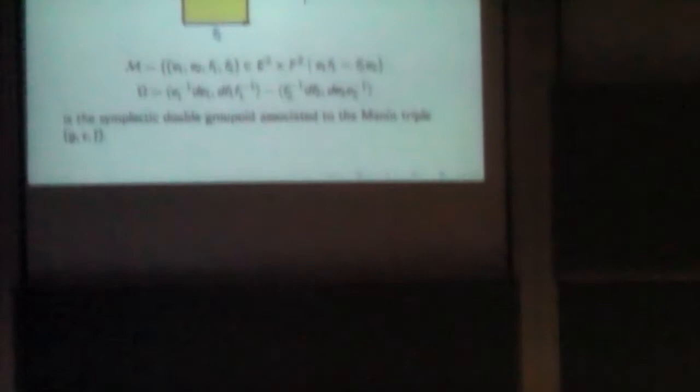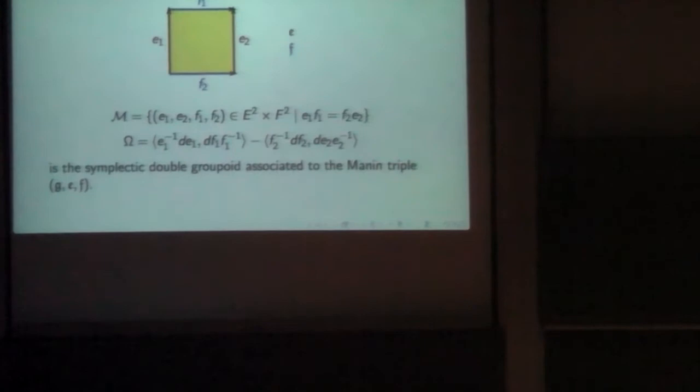If this map is transverse to the identity, it's guaranteed to be transverse to the identity if these subalgebras are transverse, just because they span the tangent space at the identity. To talk about this quotient and say that it might have a symplectic structure, you don't need transversality — it's just when trying to explicitly describe the space.